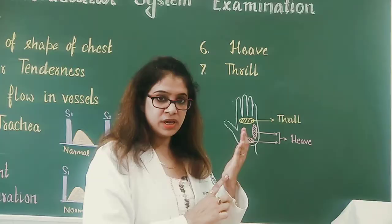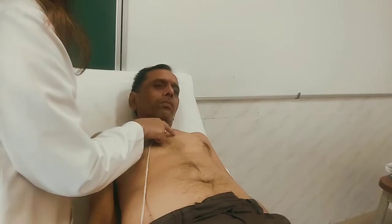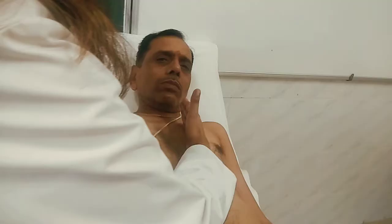Let us see on our subject. This is the left parasternal area, the most common site for the presence of heave. We can palpate with the ulnar border of the hand, ulnar border of the palm, or heel of the hand. With all these three areas we can palpate for the heave — there will be sustained impulses.